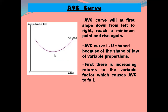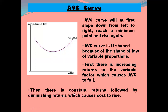As the quantity of variable input goes on increasing — as more and more variable factors are employed — the variable input becomes too much in relation to fixed input. The fixed inputs have been fully utilized, but the variable factors keep increasing, so the efficiency of variable inputs decreases, which results in an increase in AVC. AVC curve first decreases, reaches a minimum, and then increases. This U-shape is due to the law of variable proportions: first increasing returns cause AVC to fall, then diminishing returns cause cost to rise.